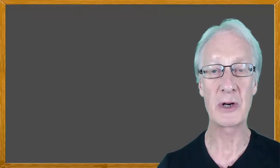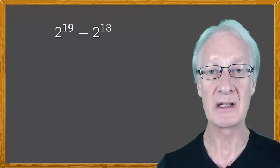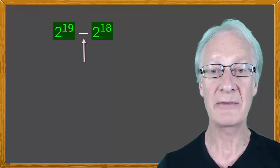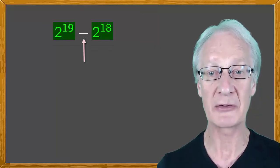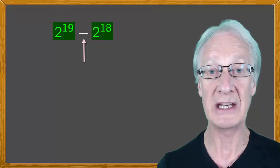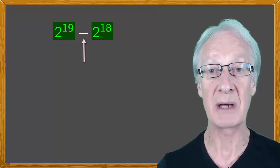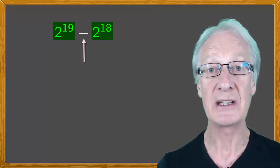We're going to consider the operation 2 to the 19 minus 2 to the 18. It's a subtraction of powers of the same base. Now, we have properties for the product and for the division of powers of the same base, but we don't have any properties that we can use for the subtraction of powers of the same base. So, let's find an alternative way of doing it.